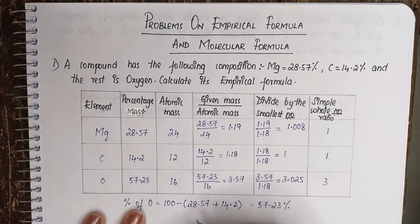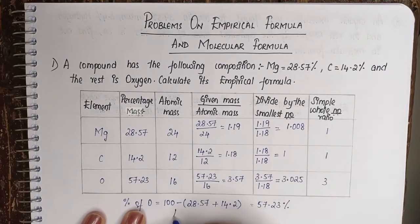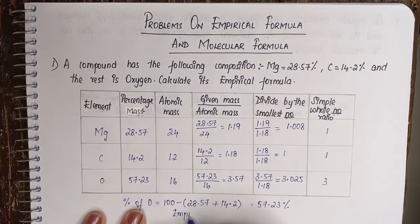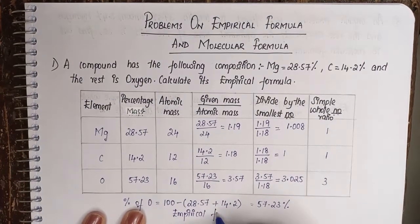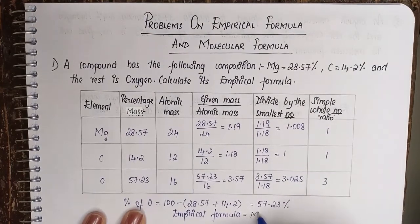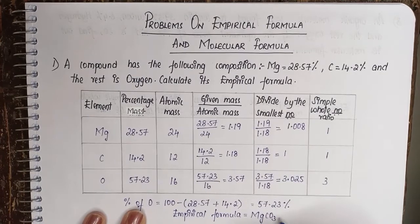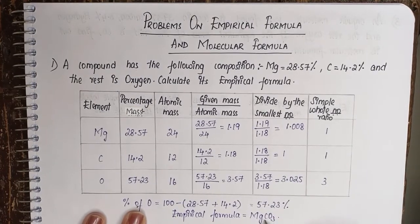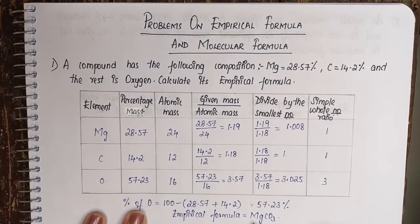So therefore our empirical formula is magnesium carbonate: Mg₁C₁O₃, which is magnesium carbonate.